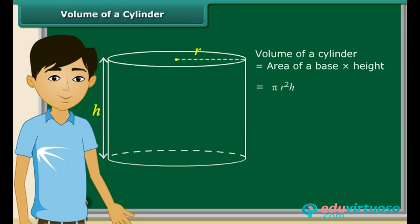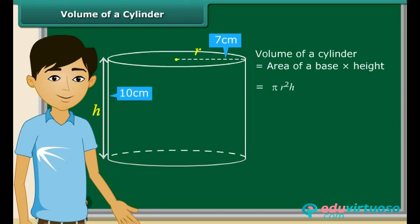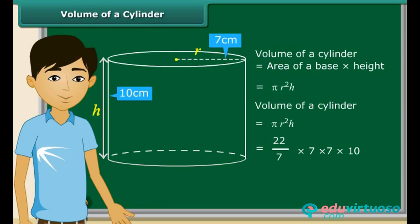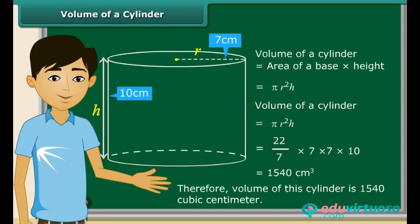Let us try an example. We have a closed right circular cylinder of radius 7 cm and height 10 cm. The formula for volume of a cylinder is pi r square h. Substituting: 22/7 into 7 into 7 into 10. This gives 1,540 cubic centimeters. Therefore, the volume of this cylinder is 1,540 cubic centimeters.